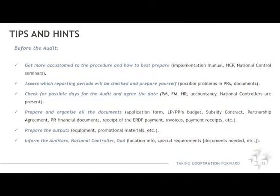Before we end, we would like to give you some tips and hints. Before the audit, get more information about the procedure and how best to prepare from the implementation manual, national contact point, and presentations from your national controller seminars. Since the population for sampling is made up of operations for which the certifying authority has declared expenditure to the European Commission in a given accounting year, you will be informed as to which expenditure related to which reporting period will be audited. Think about possible problems that occurred in those reports and be prepared to answer possible questions already during the on-the-spot check. Check for possible days when all involved are present — project manager, finance manager, human resources, accountancy, and national controller — and agree on the date of the audit with the auditors.